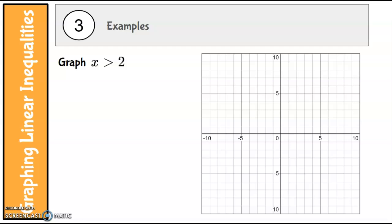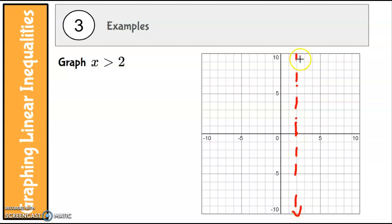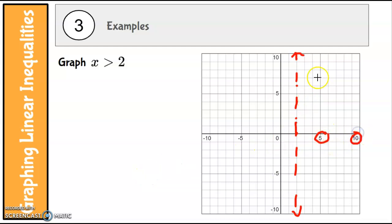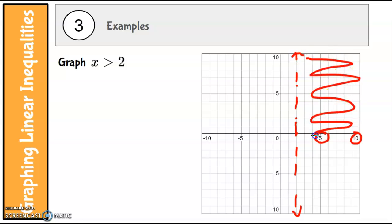Let's look at a special case: graph x is greater than 2. There's no y, so that's a vertical line at x equals 2. There's no line under the inequality symbol, so that's going to be a dashed line. On this one there's no above and under, but think about it — x is greater than 2, so where are the x values greater than 2? The shading would be on the right side of the line.